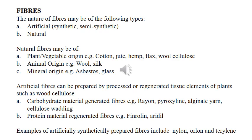Artificial fibers may be processed or regenerated tissue elements of plants, such as wood cellulose, and could be categorized as carbohydrate-material generated fibers with examples such as rayon and yarn, or protein-material generated fibers with examples such as ardil. Examples of artificially synthetic prepared fibers include nylon and terylene.